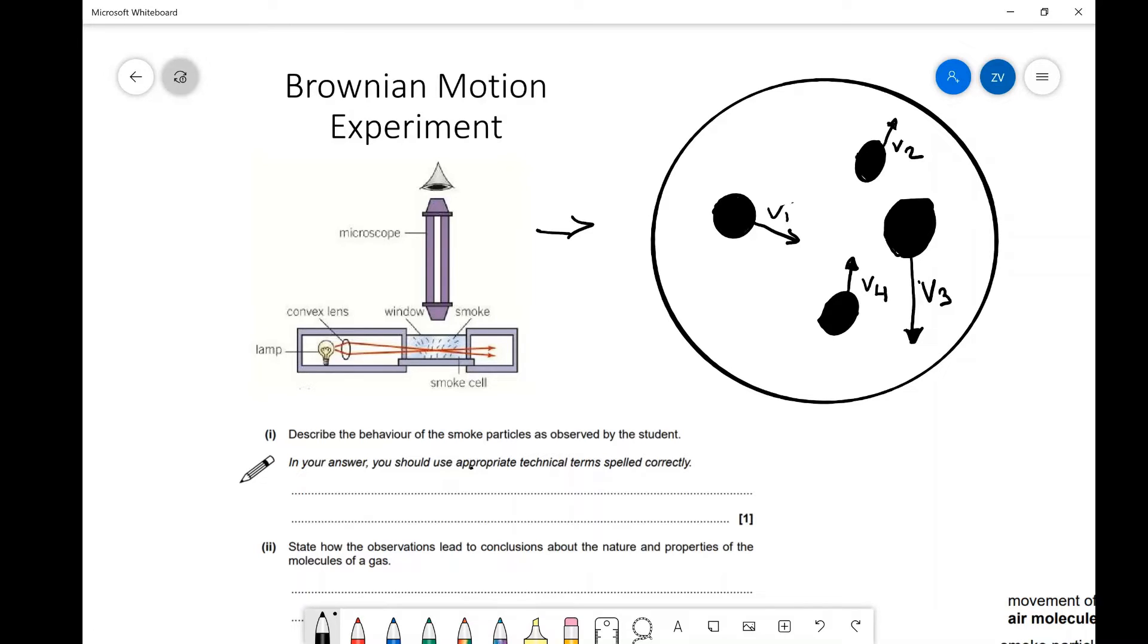Why are they moving randomly? What's causing them to move randomly? Well, let's imagine the air particles. We cannot actually see them, but I'm just going to draw them for illustration purposes.